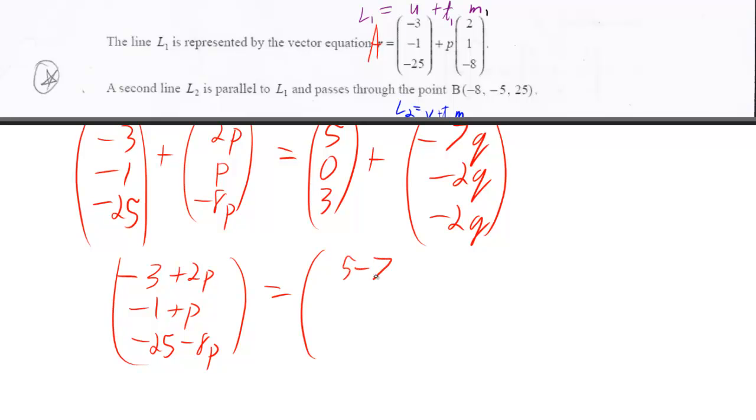And we'll want that to be equal to the vector 5 minus 7Q, 0 minus 2Q—we'll just write that as minus 2Q—and 3 minus 2Q.